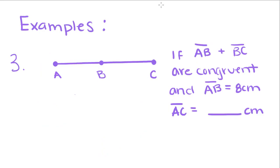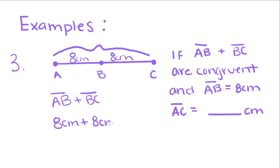For our last example, we're going to put the two things we learned together. So if AB and BC are congruent, and AB is equal to 8 centimeters, what is the length of AC? Since we know that AB and BC are congruent, that means that they have equal length. So if AB is equal to 8 centimeters, that means that BC also has to be equal to 8 centimeters. So to find the whole length of this, we're going to add AB and BC together. So we get 8 centimeters plus 8 centimeters equals 16 centimeters. So AC equals 16 centimeters.